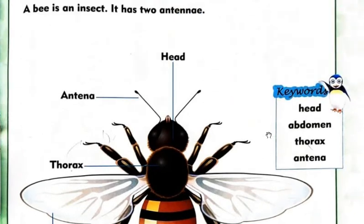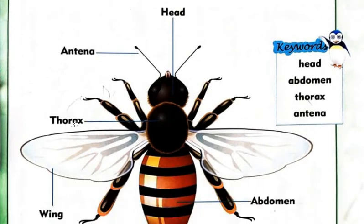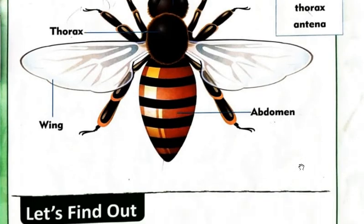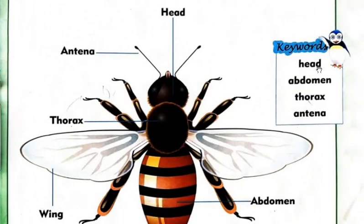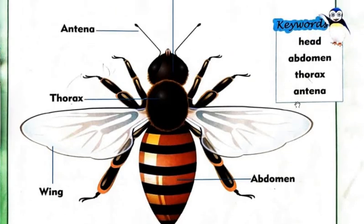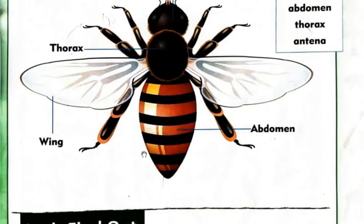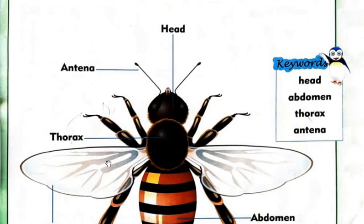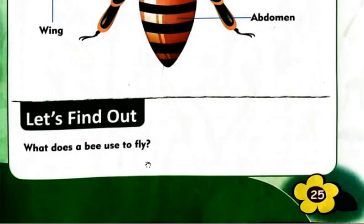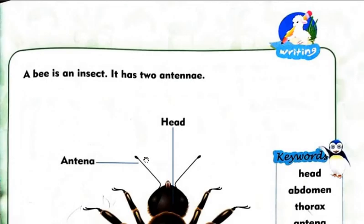Body parts one more time: head, antenna, thorax, wing, abdomen. Here are the keywords — these are the body parts. I will read out: head, abdomen, thorax, antenna. Okay, thank you.